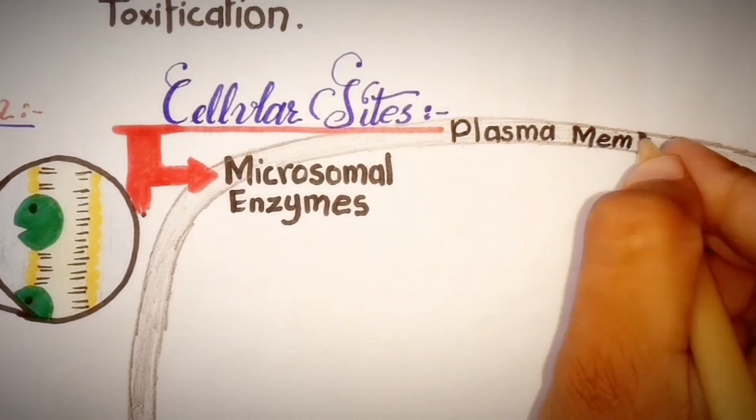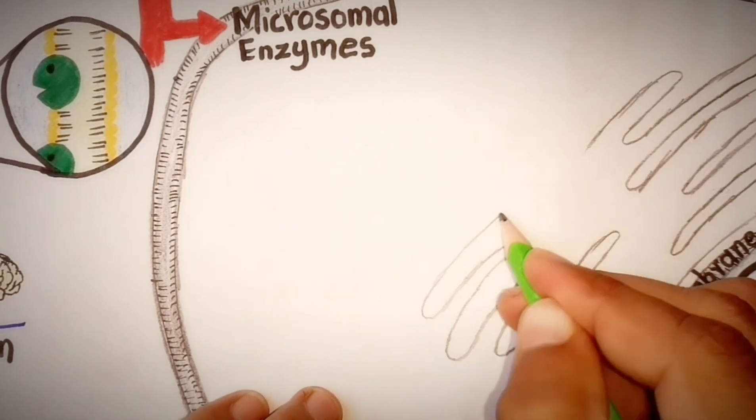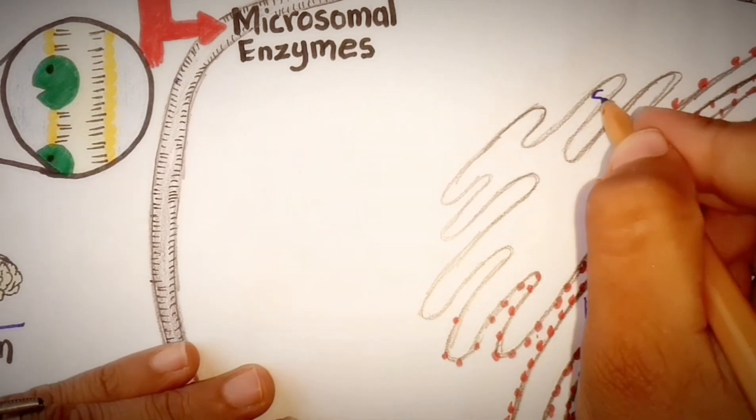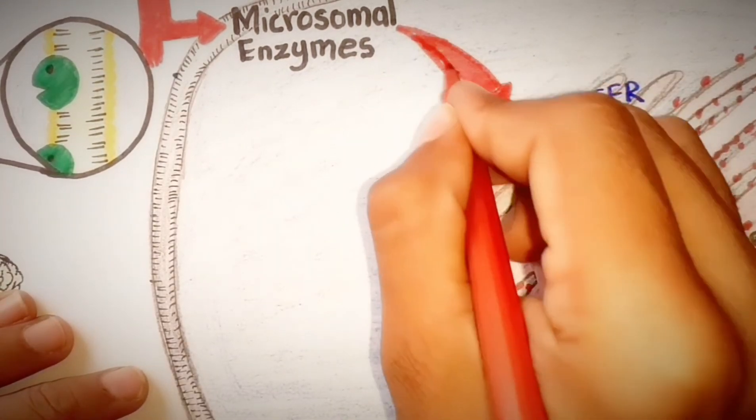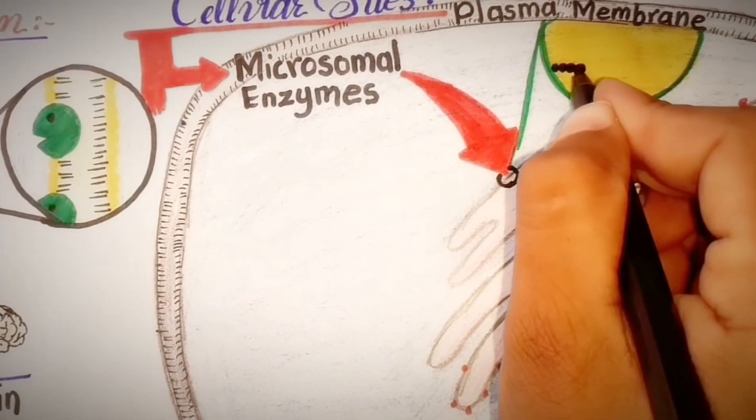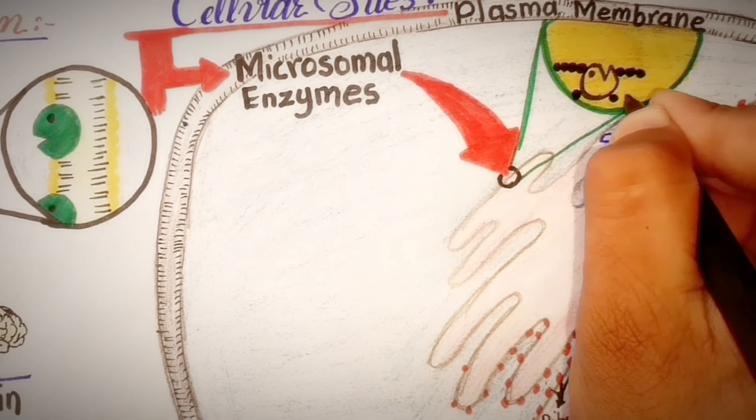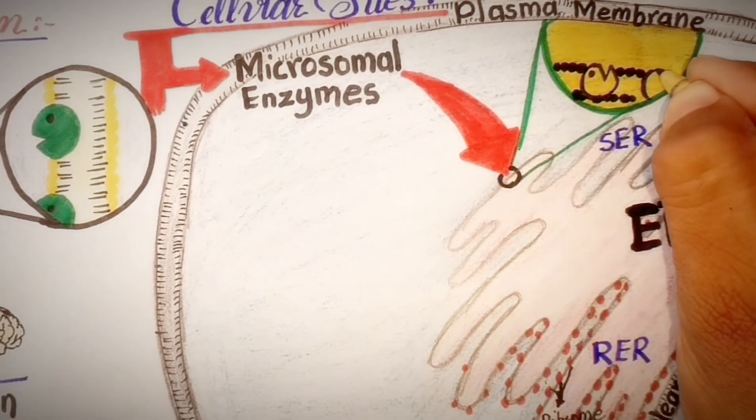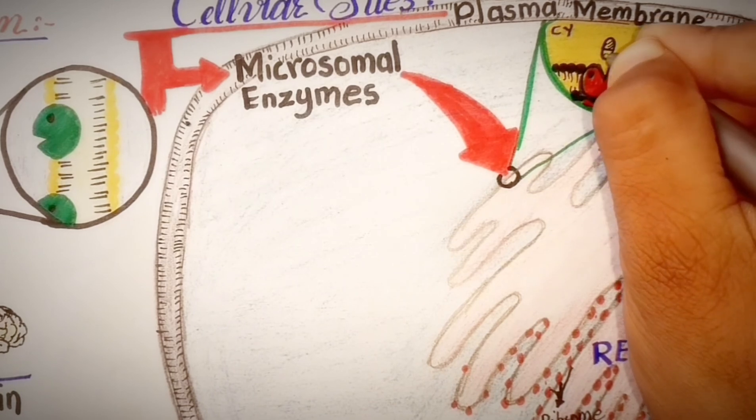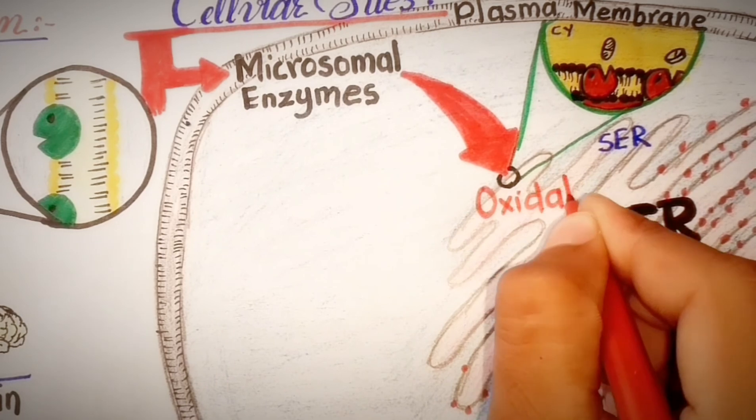Microsomal enzymes are located on smooth endoplasmic reticulum, abundant in liver, also in kidney, intestinal mucosa, and lungs. The monooxygenases enzymes, cytochrome P450 enzymes, glucuronosyltransferases enzymes, epoxide hydrolases enzymes, and some other enzymes are microsomal enzymes.